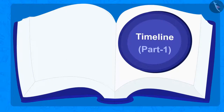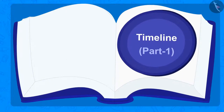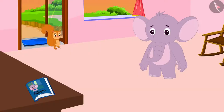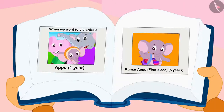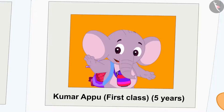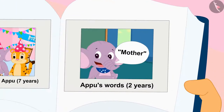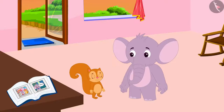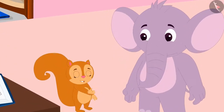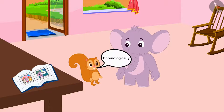In this video, we will learn about the timeline. Chanda has come to Appu's house. She saw a photo album at Appu's house. Chanda opened the album and started looking through it. The album contained many photographs from Appu's childhood to date. Chanda told Appu, why don't they together arrange those pictures chronologically from his childhood to date?